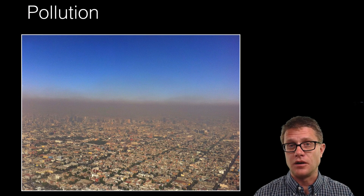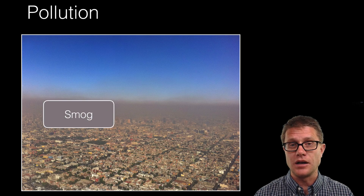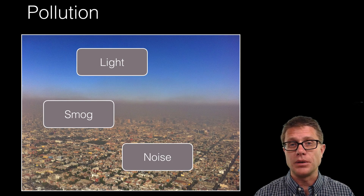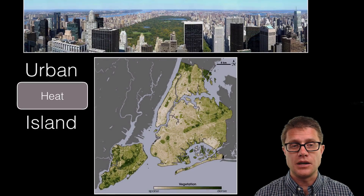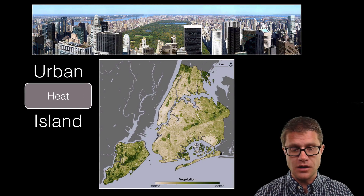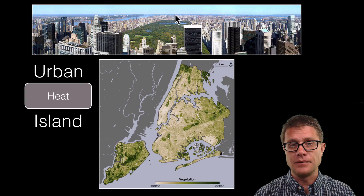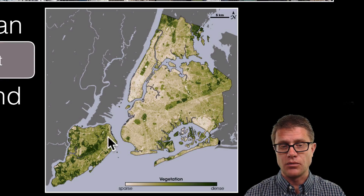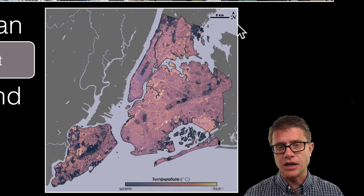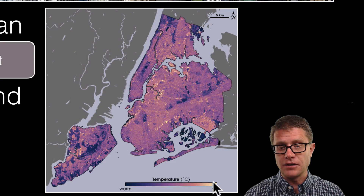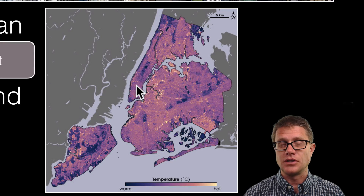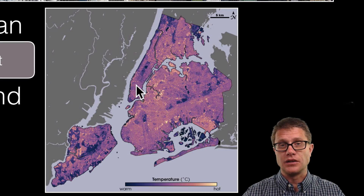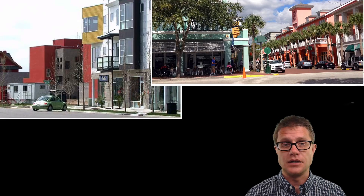Sprawl brings with it problems in all cities — pollution would be an example. This is smog in Mexico City. We also get noise, light, and heat pollution. If we look specifically at heat pollution, we are seeing these heat islands where cities are. This is a picture of Manhattan — Central Park is right here. Areas that are really green are rich in vegetation, but where we do not have that vegetation, we are going to have hotter temperatures. As we build up those cities it is actually absorbing that heat and creating a heat island.